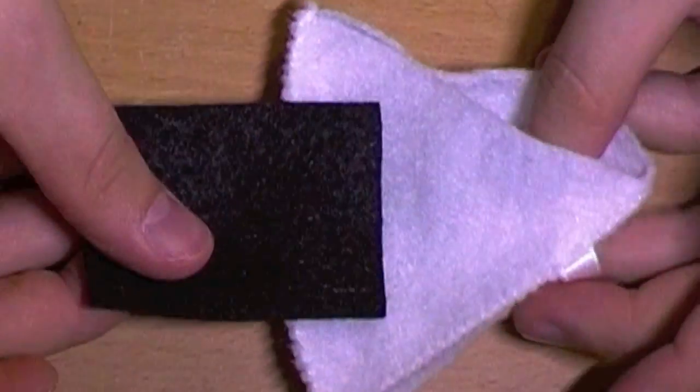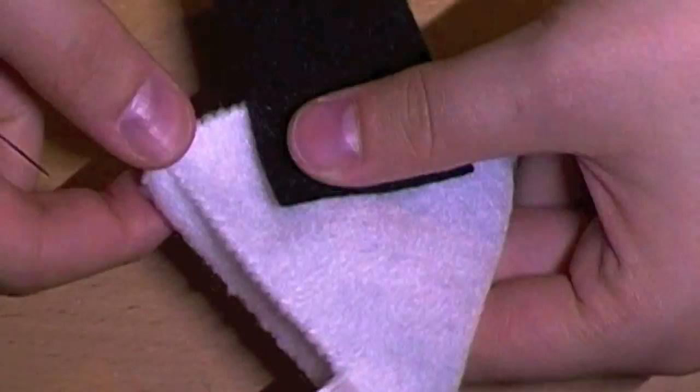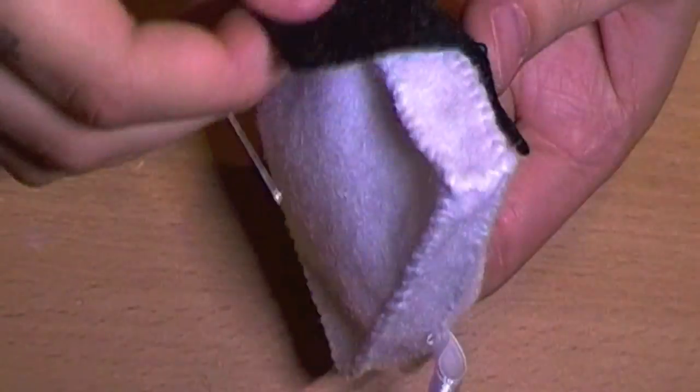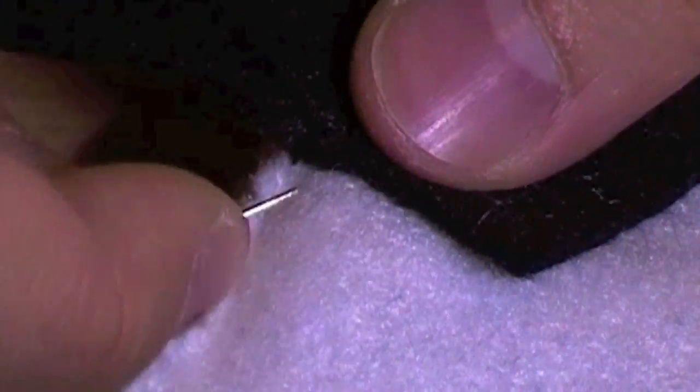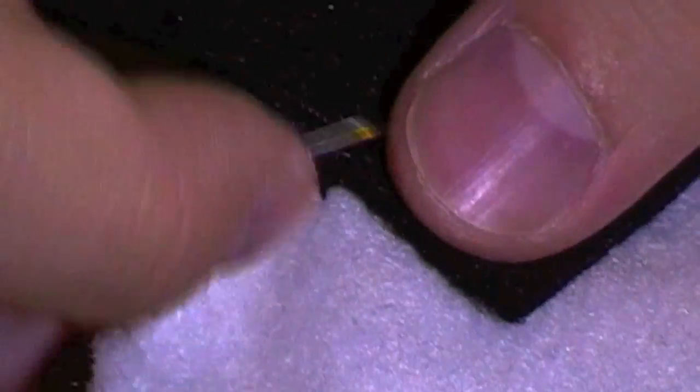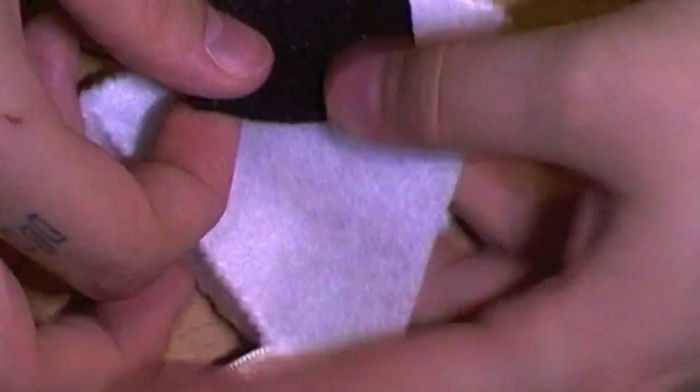Once you have that done you're going to take the black piece and some black thread and you're just going to align it in the middle along the curved side and you're just going to stitch it into place. As you can see I'm using the exact same stitch as before but now you just want to make sure that you're sewing the black onto the white. So if you look underneath you should see the threading inside your plush.